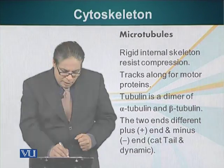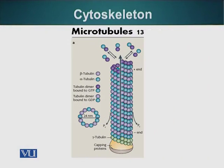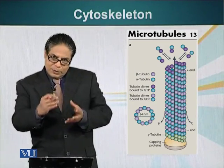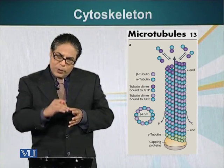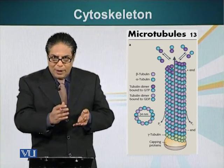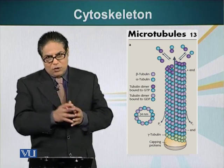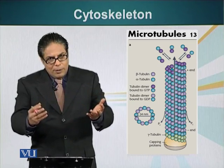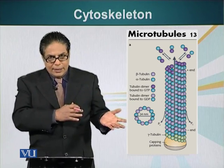Microtubules are linear structures, and the two ends of a microtubule are different. One end is called the plus end and the other is called the minus end. The plus end is the site where new tubulin subunits can add on, resulting in elongation of the microtubule. Subunits also come off from the plus end much more quickly than from the minus end.